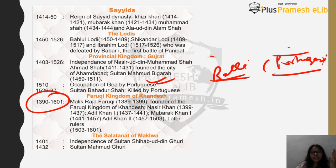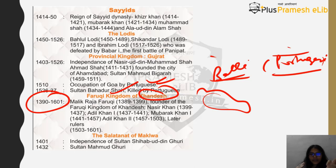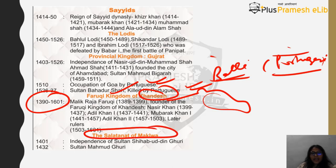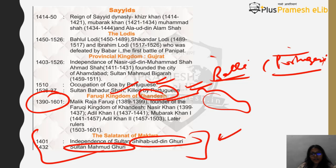Then comes the Faruki kingdom of Khandesh, which starts from 1390 and goes till 1601 — roughly about 300 years, but the empire's extent was not very large. Hence we don't read much about Khandesh unless you belong to that state. The founders include Malik Raja Faruki and then Nasir Khan, Adil Khan, Mubarak Khan. Similarly there is the Sultanate of Malwa, but these are included in the chart mainly so you know something like this existed.